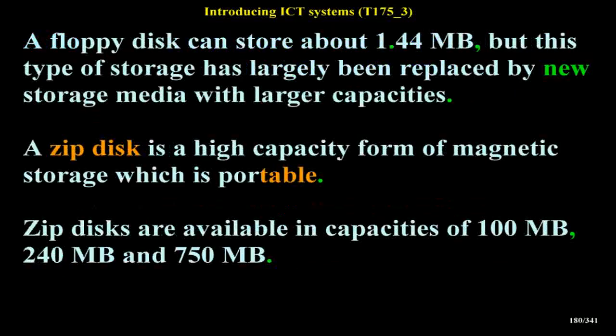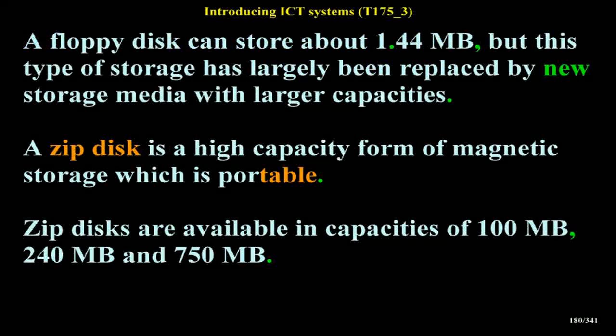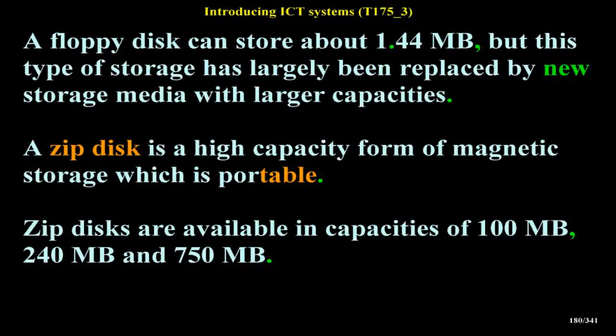A floppy disk can store about 1.44 megabytes, but this type of storage has largely been replaced by new storage media with larger capacities. A zip disk is a high-capacity form of magnetic storage which is portable. Zip disks are available in capacities of 100 megabytes, 240 megabytes and 750 megabytes.